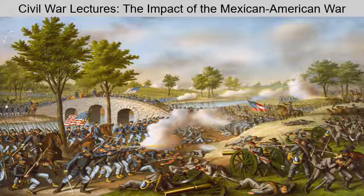In August of 1846, Representative David Wilmot, a Democrat from Pennsylvania, proposed an addition to the war appropriations bill. He proclaimed that any territory gained from Mexico should ban slavery — even before the Treaty of Guadalupe Hidalgo was being negotiated. Wilmot was part of a group of Northern Democrats who believed President Polk was pro-Southern, having supported a tariff that favored the South at the expense of Northern manufacturers and compromised with the British on the Oregon boundary while going to war with Mexico.